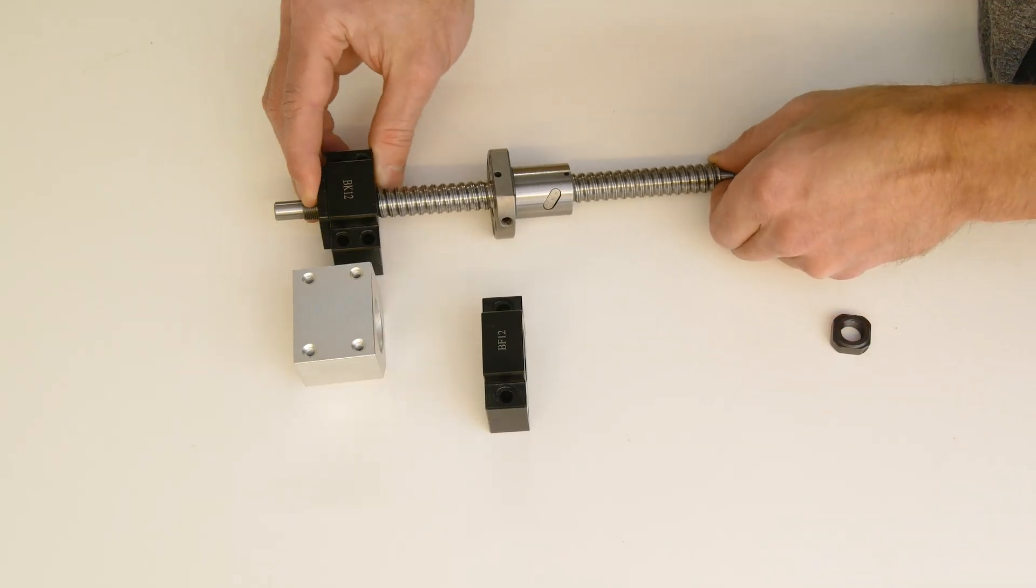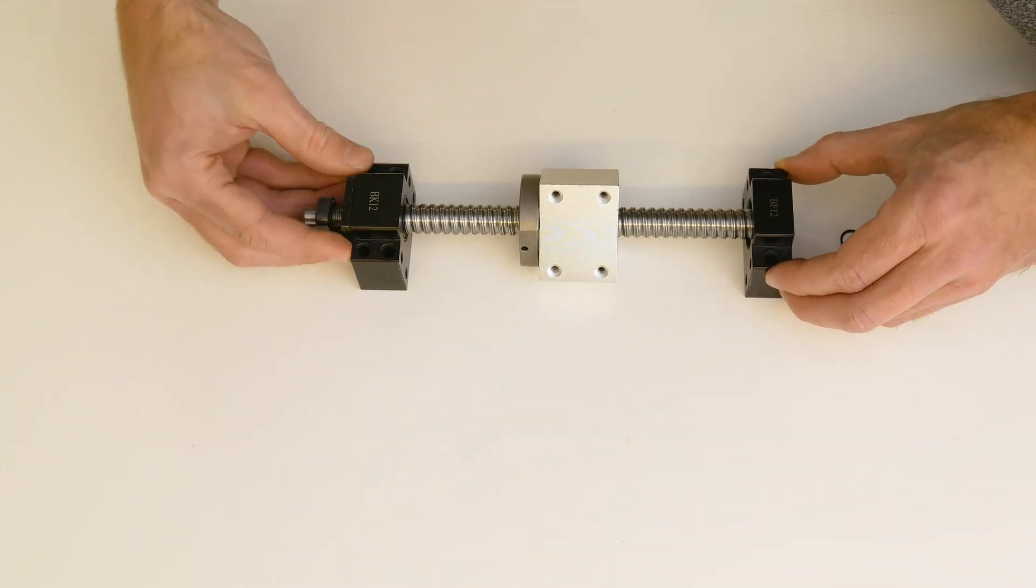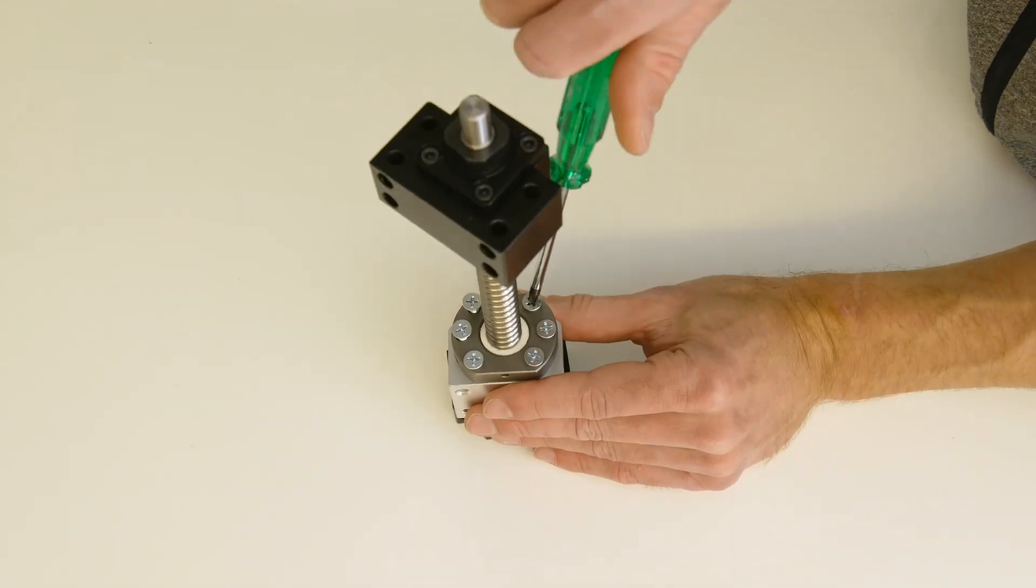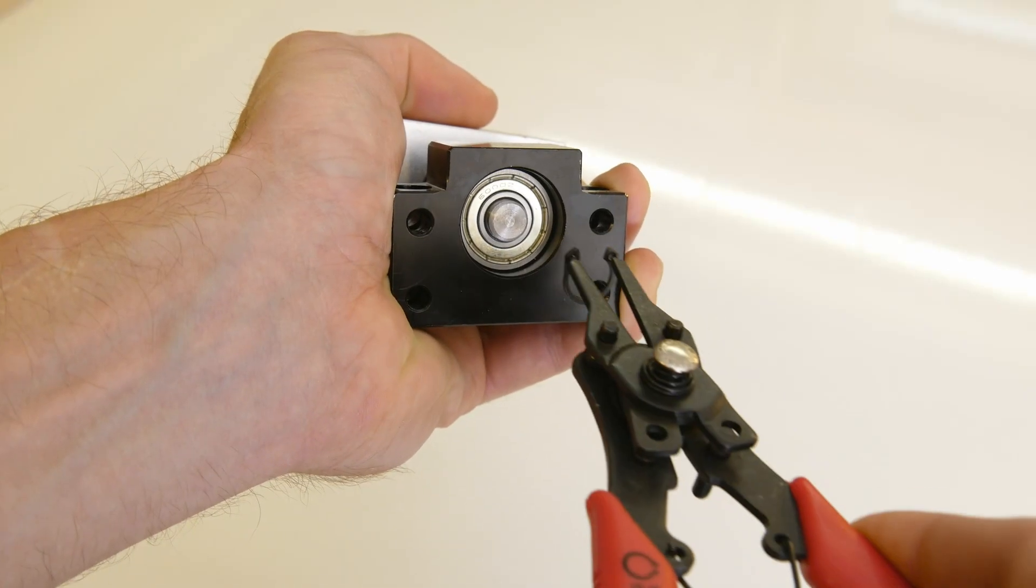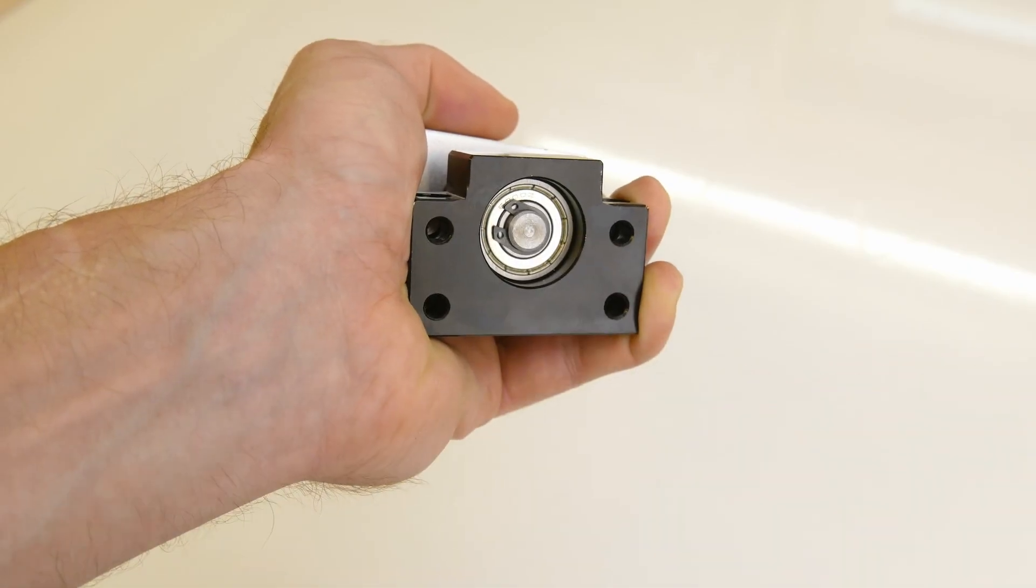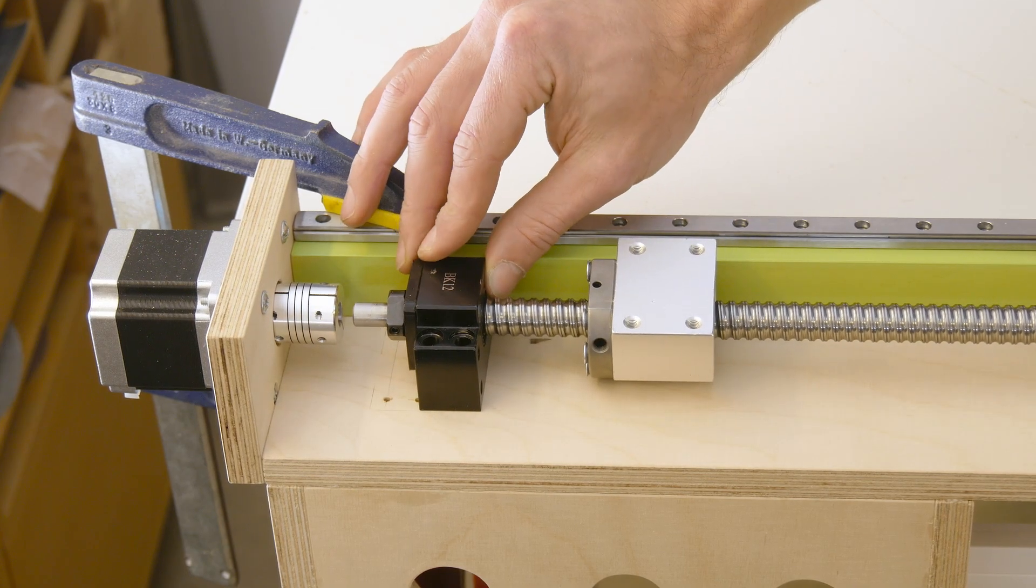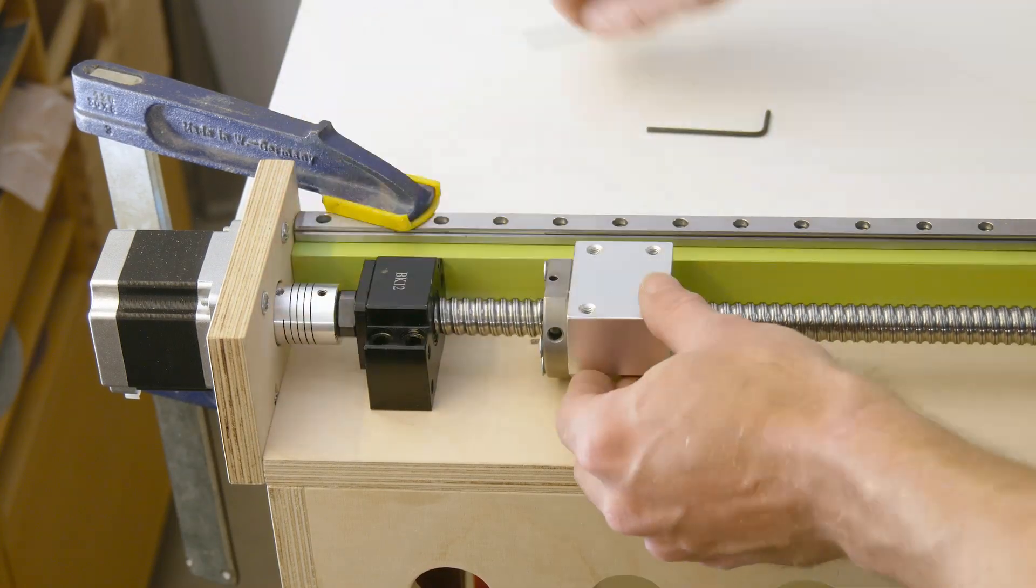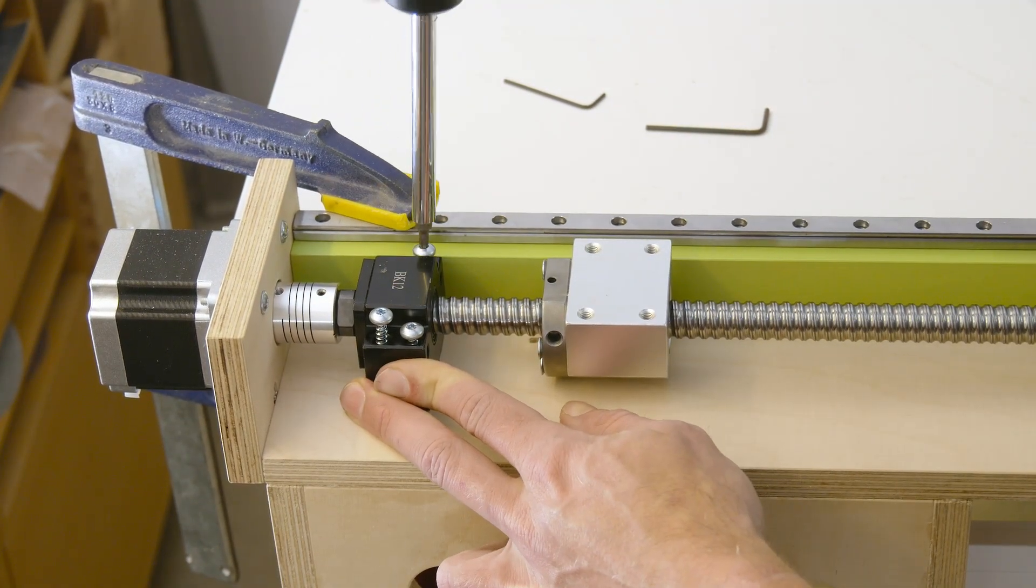With the motors in place it was time to mount the ball screws. They came as a set including the ball nut, a ball nut housing which allowed for easier connection to the sides in my case, two end supports and the actual screw. Putting the parts together was very easy and straightforward. With the assembled ball screws I could now determine their position and mark the mounting holes and pre-drill them. Using the two set screws I connected the other side of the motor coupler to the ball screw and fixed it into place.